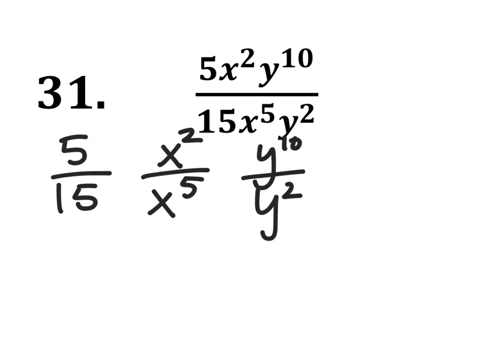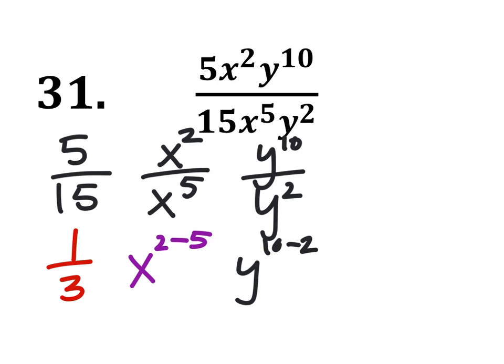So 5 divided by 15 is 1 third. This would be x to the power of 2 minus 5, and this would be y to the power of 10 minus 2. So we still have the 1 third, x to the power of negative 3, and y to the power of 8. But we can't have any negative exponents,